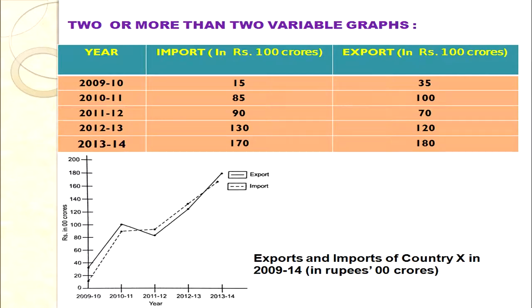For imports: 2009–10: 15, 2010–11: 85, 2011–12: 90, 2012–13: 130, 2013–14: 170. The imports are shown with a dotted line — all the points are joined with a dotted line. For exports we use a plain line.